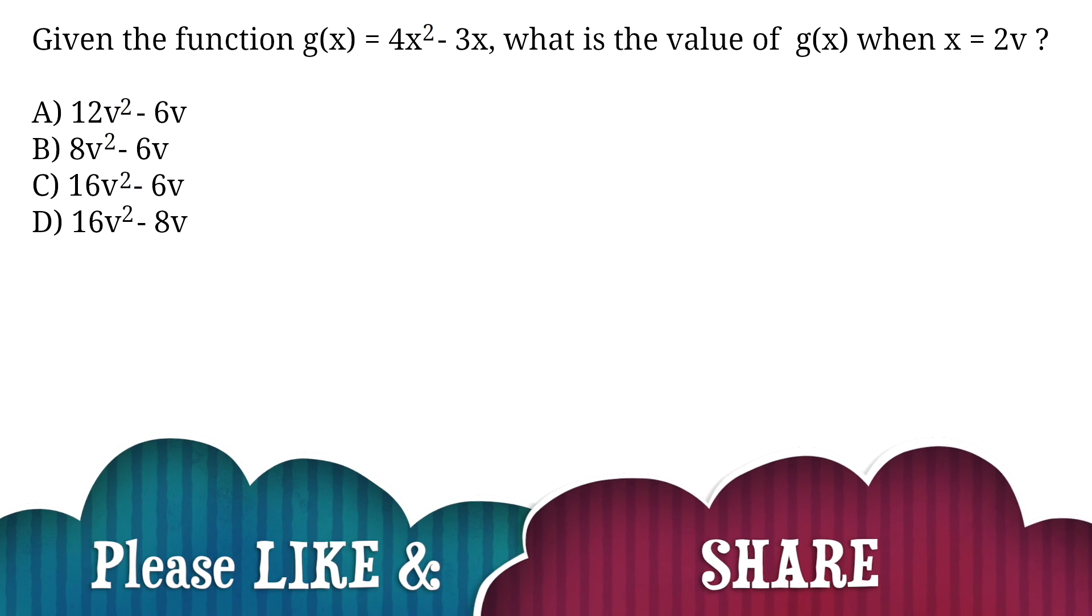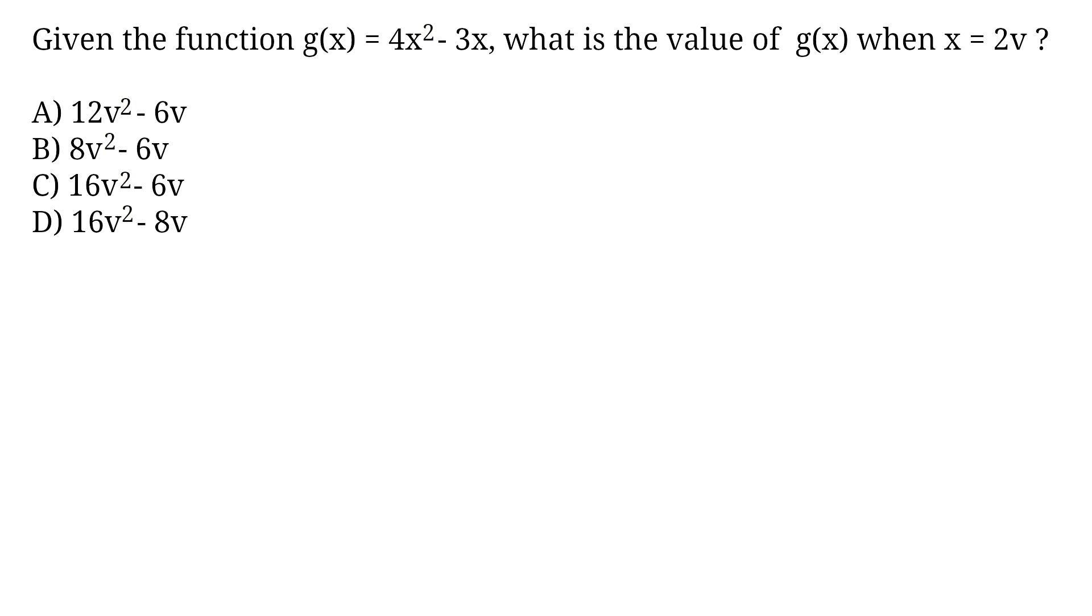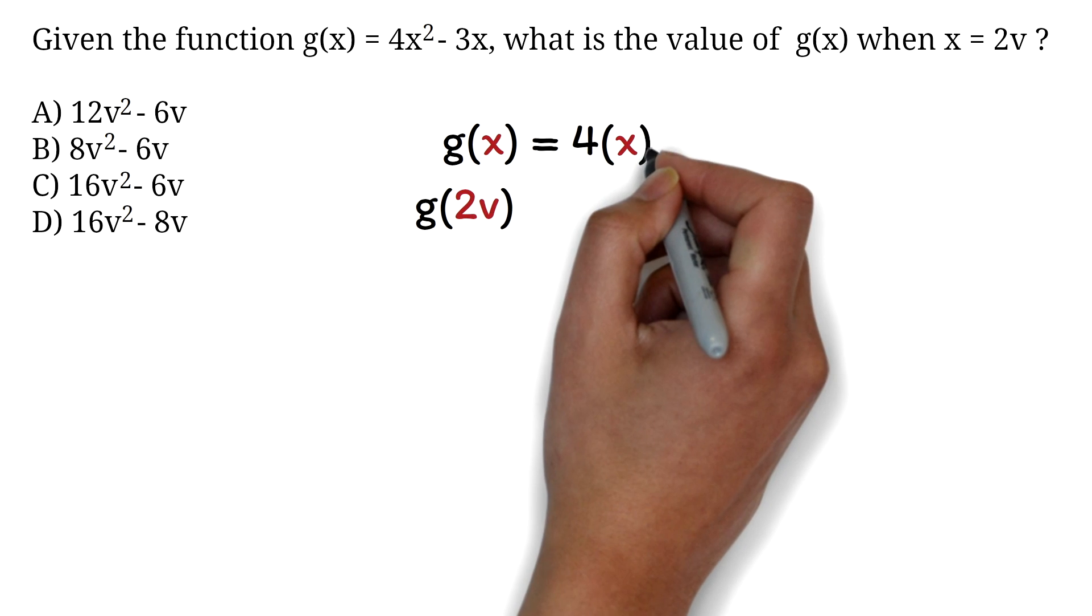Given the function g(x) = 4x² - 3x, what is the value of g(x) when x = 2v? A) 12v² - 6v, B) 8v² - 6v, C) 16v² - 6v, D) 16v² - 8v. For function questions like this, all our work is to substitute 2v wherever we see an x in our function.